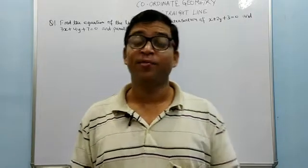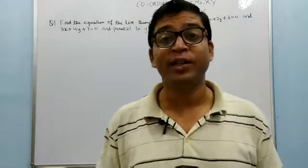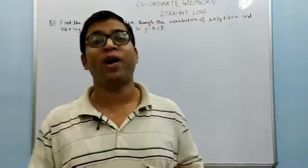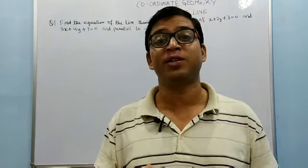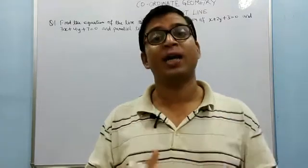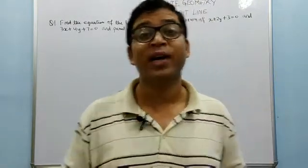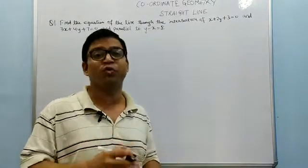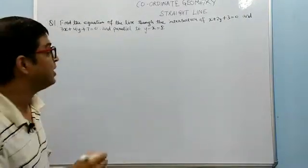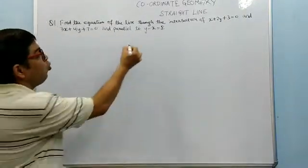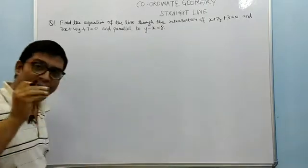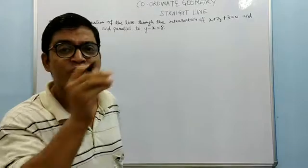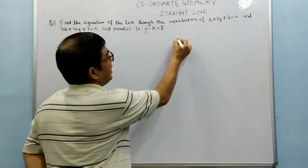Good morning friends. Today we will see the family of straight lines — how to find a set of straight lines which are satisfying a set of given conditions. The very common formula which we use: if two lines are given, any line passing through the intersection of those two lines is taken as the equation of the first line plus lambda times the equation of the second line equal to zero.